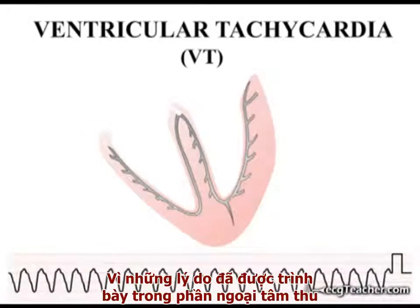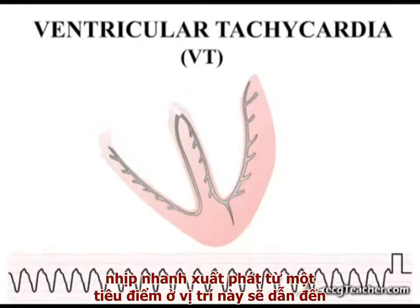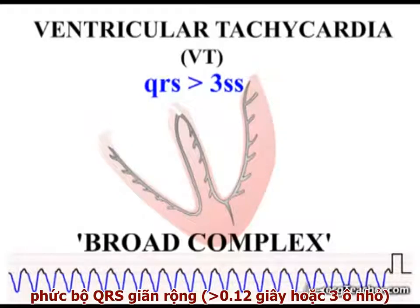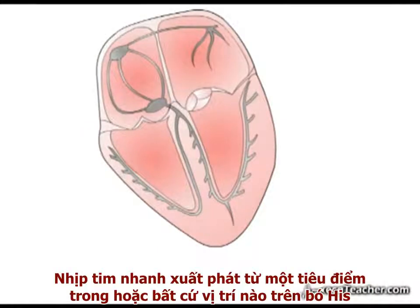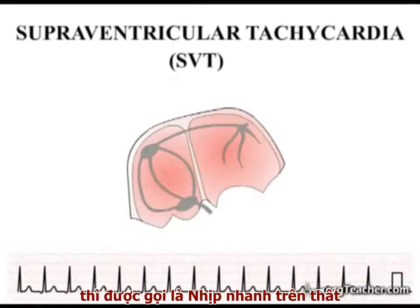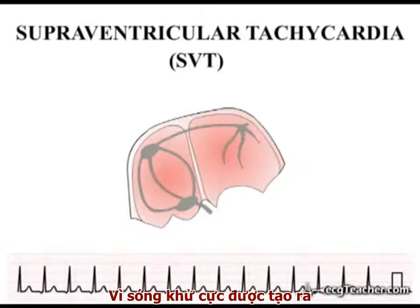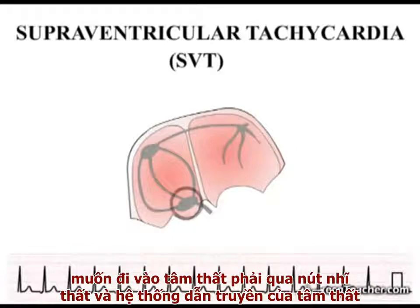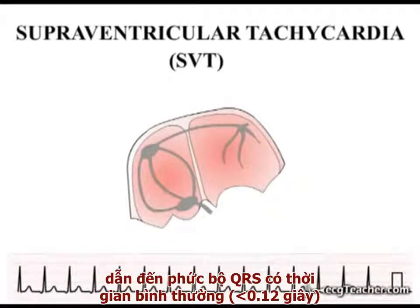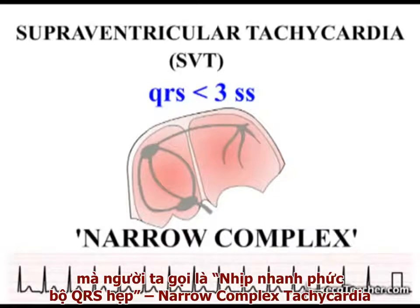For the reasons outlined in the video on ectopic beats, tachyarrhythmias arising from a focus in this region are associated with broad QRS complexes. Tachycardia arising from a focus in or anywhere above the bundle of His is called a supraventricular tachycardia. In this case, as the depolarization wave generated must enter the ventricles via the AV node and therefore the ventricular conducting system, a tachyarrhythmia arising from anywhere in this region is usually associated with QRS complexes of normal duration — a so-called narrow complex tachycardia.